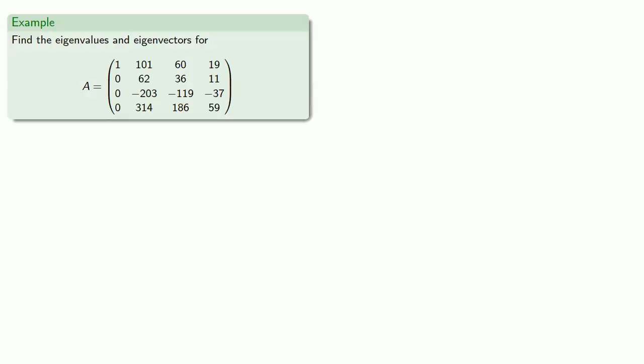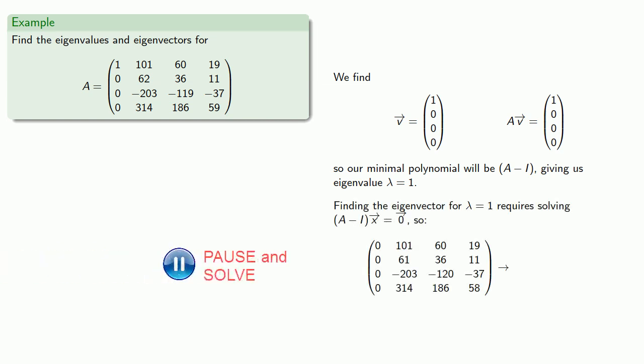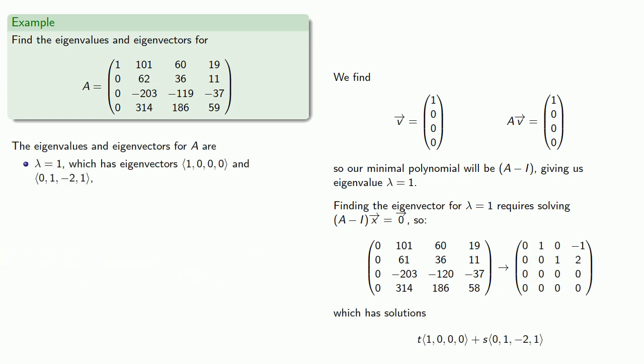So for example, let's say we want to find the eigenvalues and eigenvectors for a 4x4 matrix. We'll pick the most exciting seed vector possible. Or maybe not. We find Av and our set v, Av is obviously dependent and so our minimal polynomial will be A minus I, which gives us an eigenvalue of lambda equals 1. And once we know the eigenvalue, we can find the eigenvector. The eigenvalue of lambda equals 1 actually has two eigenvectors associated with it.